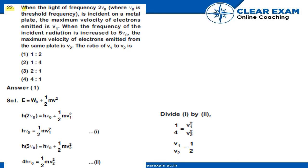22. When the light of frequency 2V0, where V0 is threshold frequency, is incident on a metal plate, the maximum velocity of electrons emitted is V1.